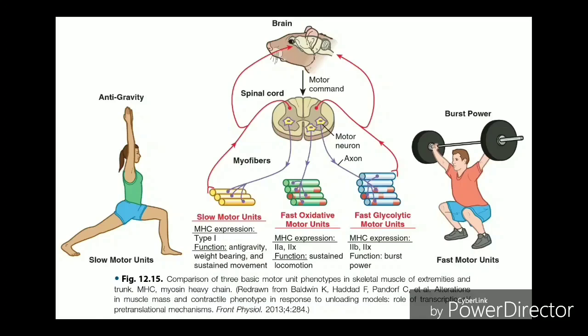Signaling begins when a neuronal action potential travels along the axon of a motor neuron, and then along the individual branches to terminate at the NMJ. At the NMJ, the axon terminal releases a chemical messenger, or neurotransmitter, acetylcholine. The acetylcholine molecules diffuse across a minute space called the synaptic cleft and bind to acetylcholine receptors located within the motor end plate of the sarcolemma on the other side of the synapse.